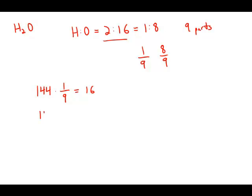And if I want to know how much oxygen, that would be 144 times 8 over 9. 144 divided by 9 is 16. This is 8 times 16, which is 128. And this is answer choice D.